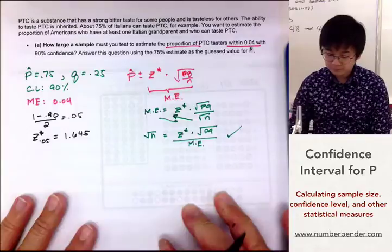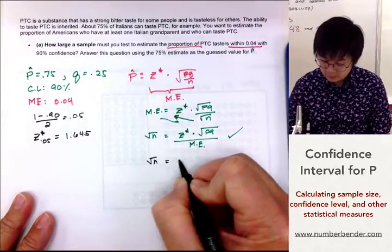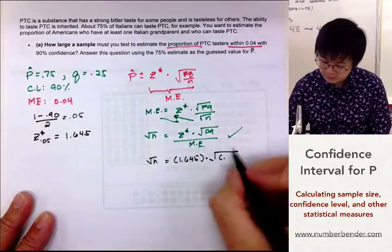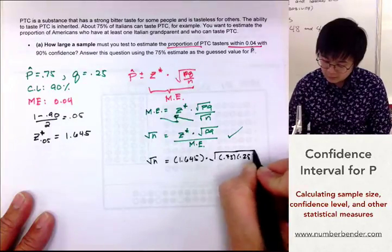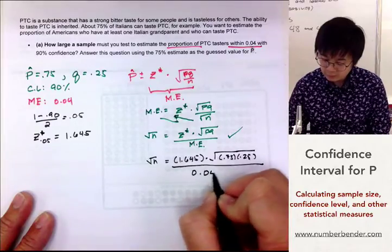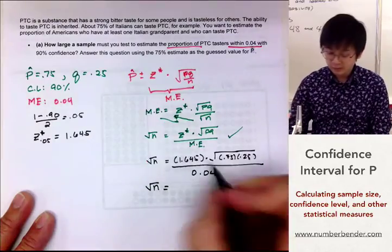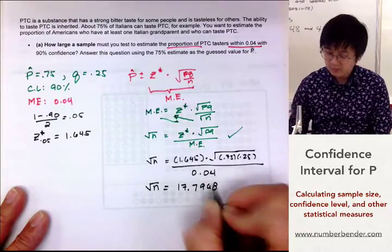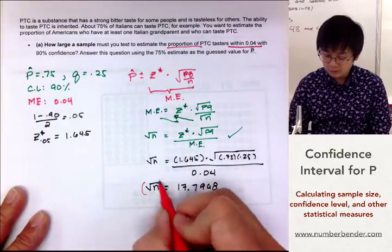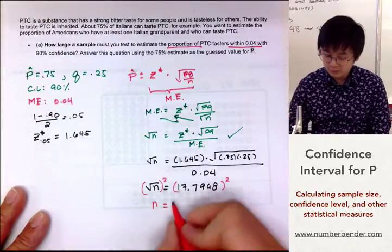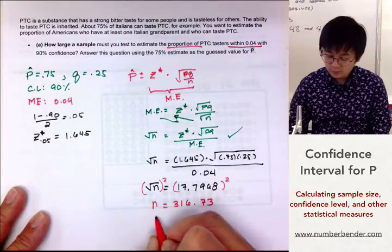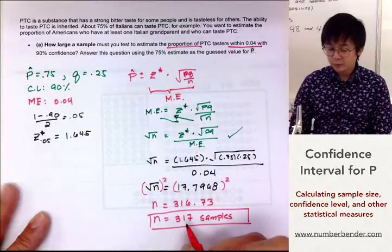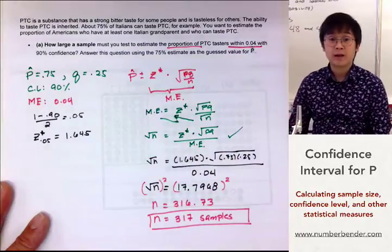Now we're ready to compute the sample size. Square root of n equals 1.645 multiplied by the square root of 0.75 times 0.25, all over 0.04. Using the calculator, this equals 17.7968. Since we need n, not the square root of n, we square both sides: n equals approximately 316.73, or 317 samples. This is the sample size needed to construct a 90% confidence interval.